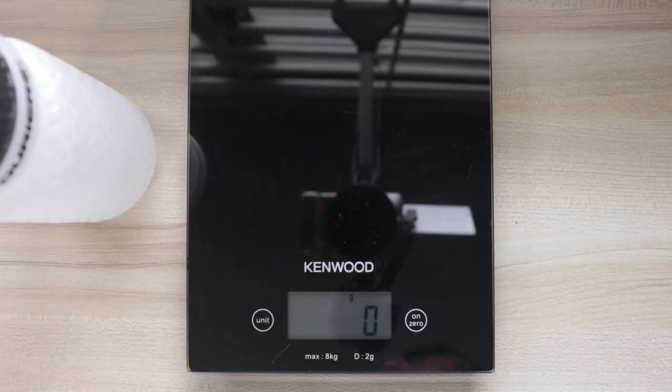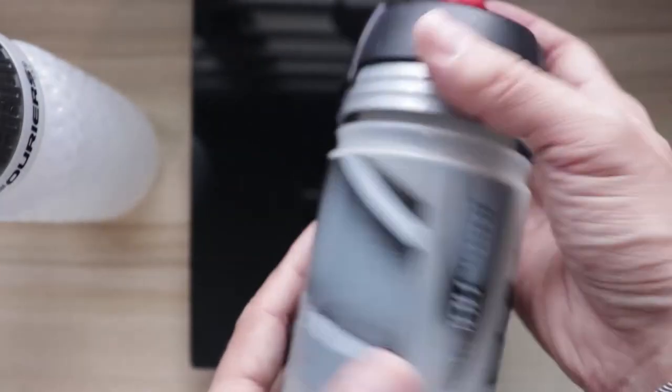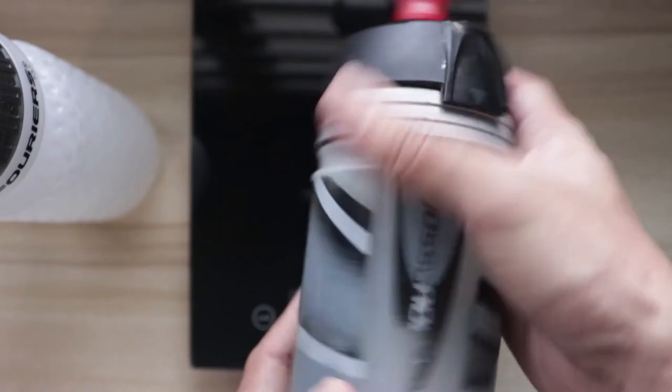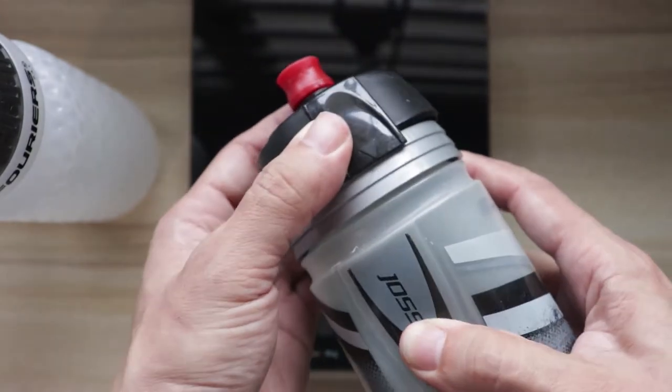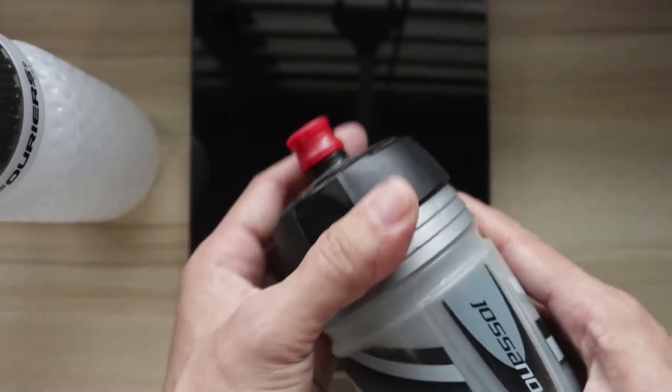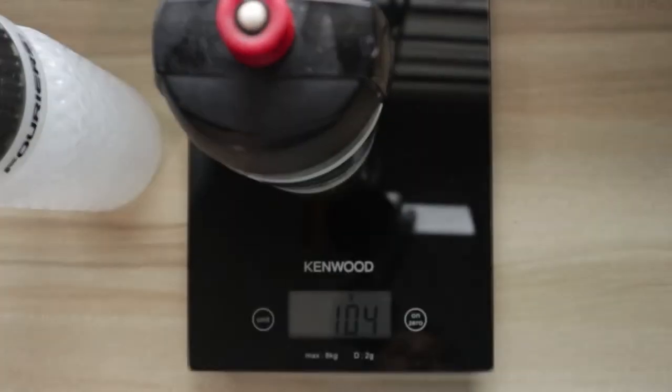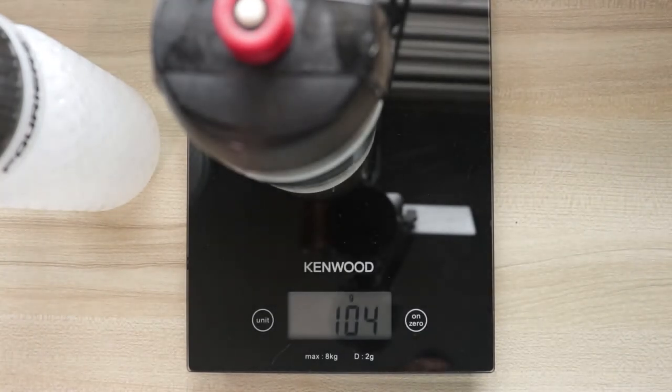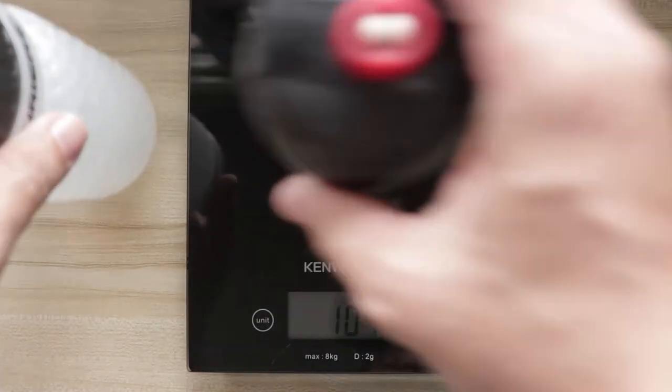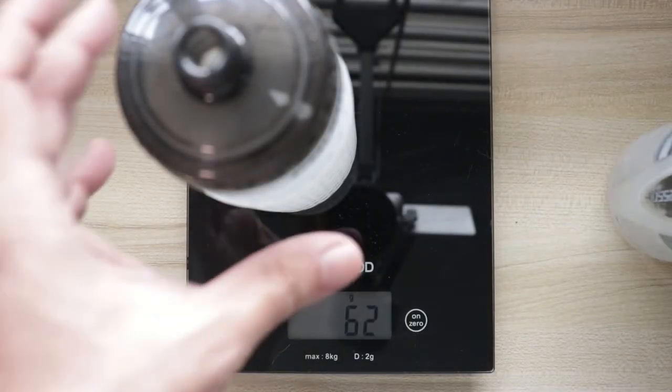Now compare that to the Elite Jossa Nova water bottle, which is a fairly common design out there. This one uses a twist-to-lock nozzle - like this it's open, and if you do it like this it's closed. So this one weighs in at 104 grams. As you can see, the Fouriers is actually about 40 grams lighter than the Elite.